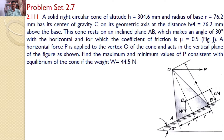A solid right circular cone of altitude h equal to 304.6 mm and radius of base r equal to 76.2 mm has its center of gravity C on its geometric axis at a distance of h/4, that is 76.2 mm above the base. This cone rests on an inclined plane AB which makes an angle of 30 degrees with the horizontal, for which the coefficient of friction is 0.5. A horizontal force P is applied to the vertex O of the cone and acts in the vertical plane of the figure as shown.